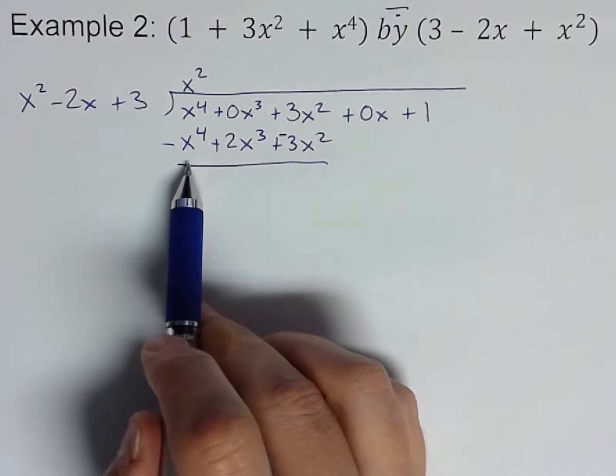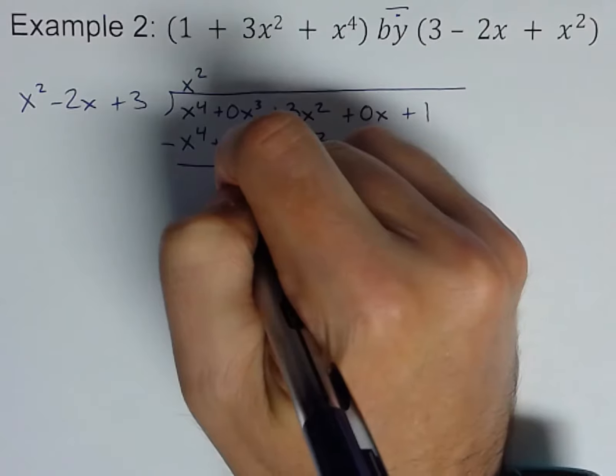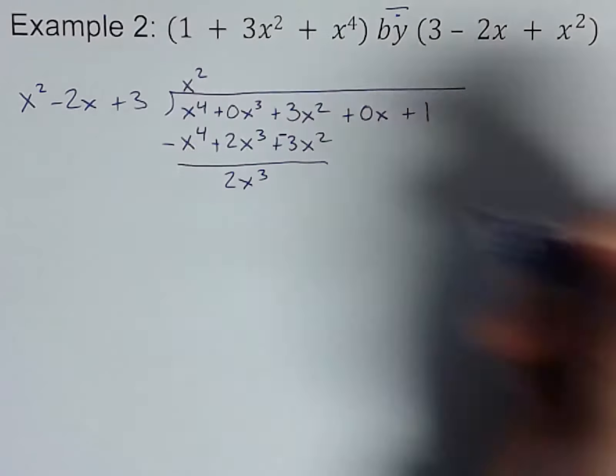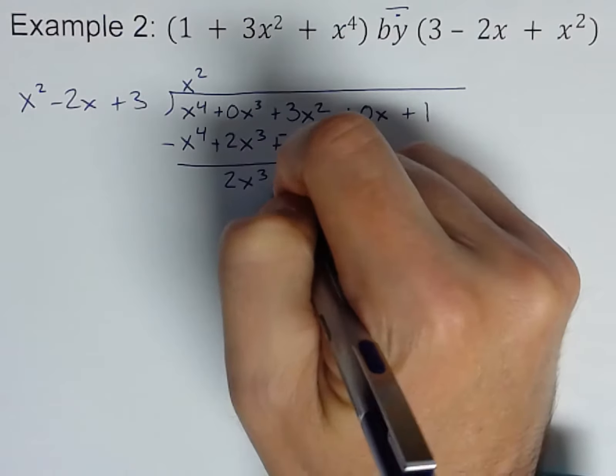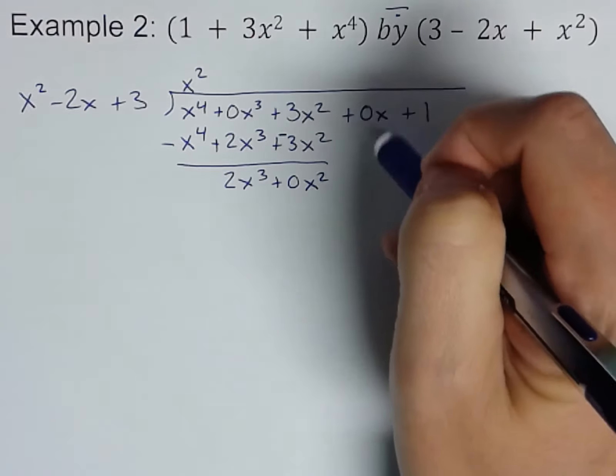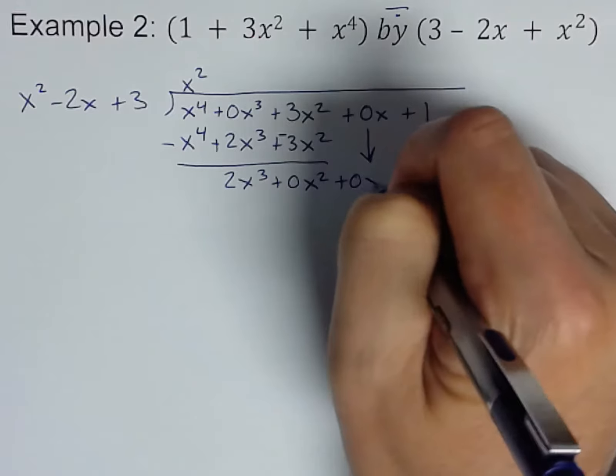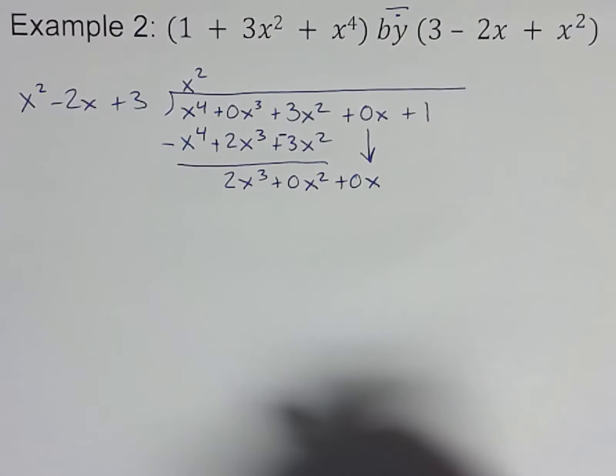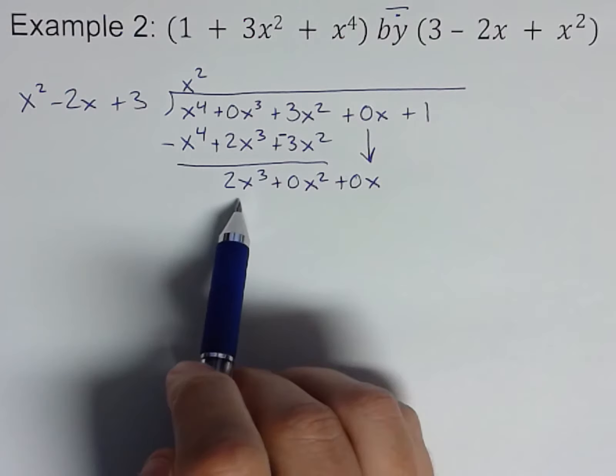And subtract. Remember, big step: go through and change those signs so you don't mess them up. x to the fourth minus x to the fourth goes away. 0x cubed plus 2x cubed is 2x cubed. 3x squared minus 3x squared goes away. Well, I'm going to go ahead and write zero, 0x squared just to align things up and bring this one down. Again, you don't need the arrow, I'm just showing you. Plus 0x.